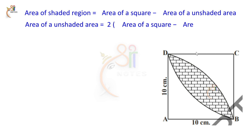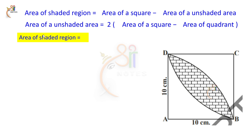Area of quadrant: subtract the quadrant from the square's area, and that gives the unshaded area. Double that for the two unshaded areas. So: area of unshaded = 2 into (area of square minus area of quadrant). Therefore: area of shaded region = area of square minus 2 into (area of square minus area of quadrant).